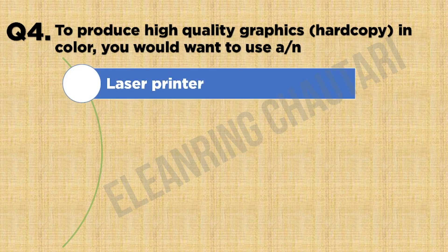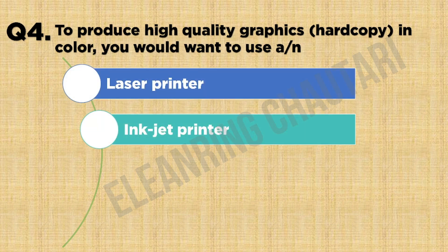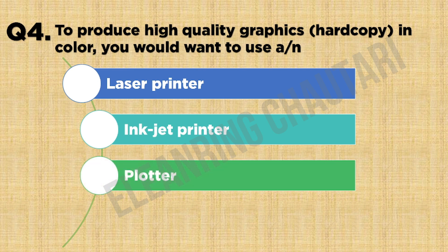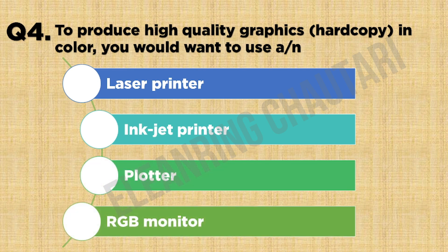Question 4: To produce high quality graphics hard copy in color, you would want to use a — Option A: laser printer. Option B: inkjet printer. Option C: plotter. Option D: RGB monitor. The correct answer is Option C: plotter.